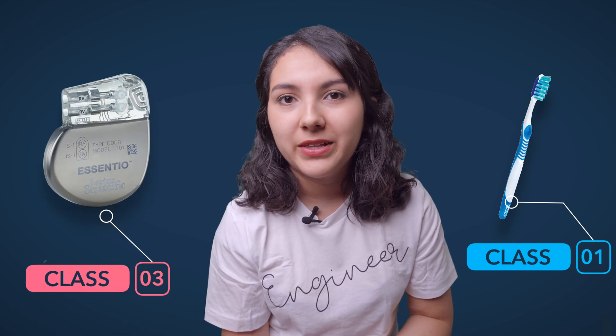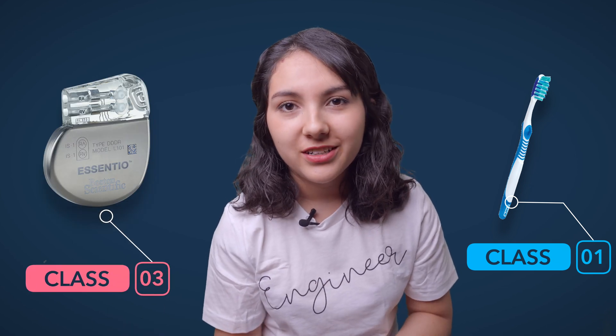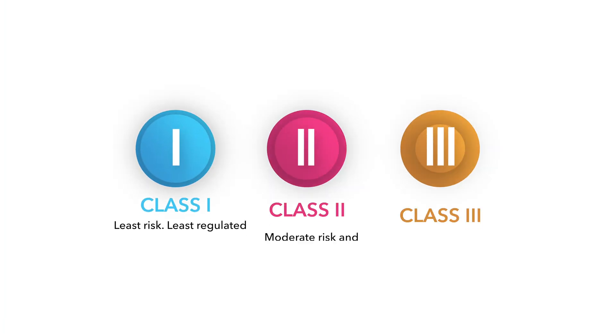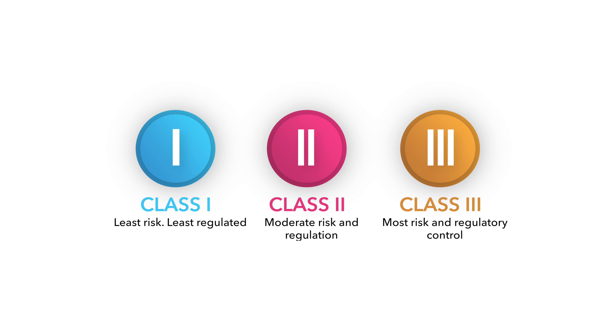For example, the FDA is not going to review a toothbrush the same way that it reviews a pacemaker that is implanted near your heart. This is why it's very important to first know the classification of your device. The FDA classifies medical devices in three main classes: class 1, 2, and 3. As the class number increases, so does the risk associated with it.